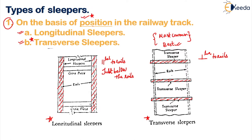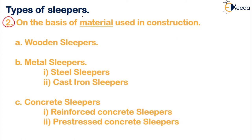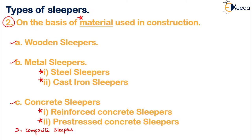The second classification is based on the material used. Based on sleeper material, sleepers are classified into three broad categories: wooden sleepers, metal sleepers (which include steel and cast iron sleepers), and concrete sleepers (which include reinforced concrete and pre-stressed concrete sleepers). There is also an additional type — composite sleepers — which is a combination of the above types.